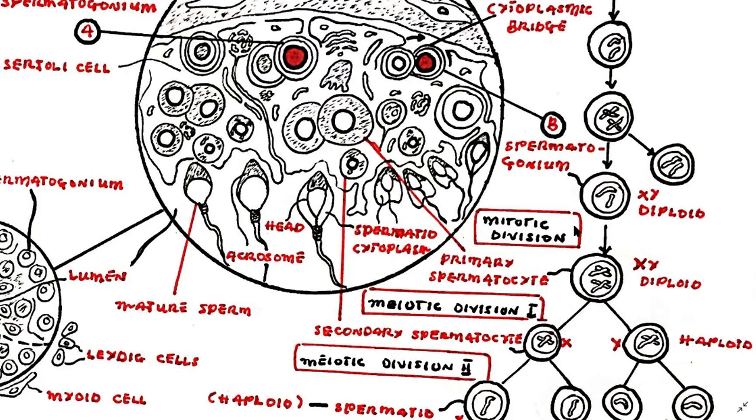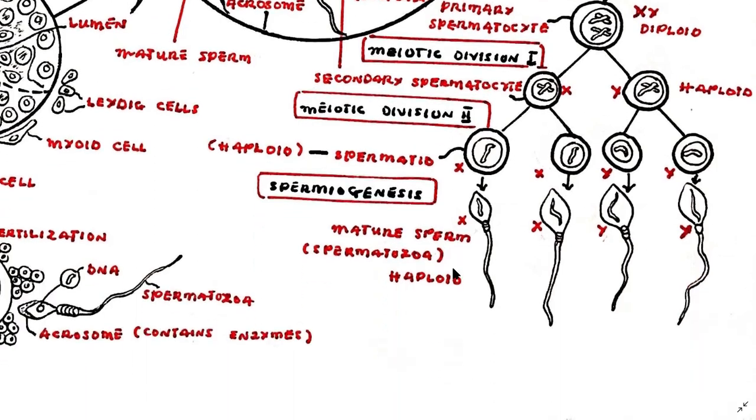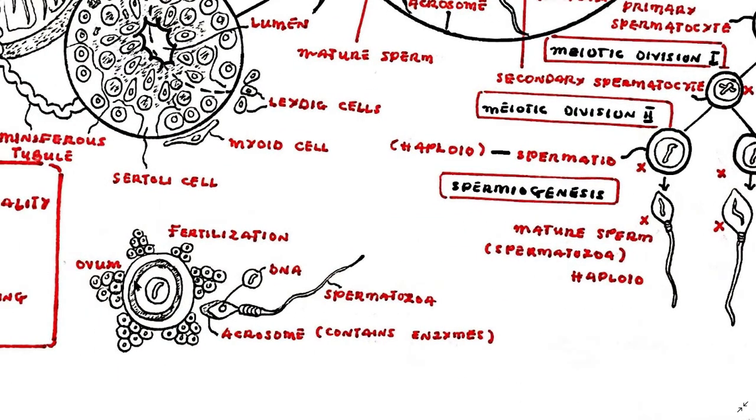At a certain point a spermatogonium will stop its other duties and begin meiosis. The cells that result from meiosis will then pass through more stages of maturation and development and will become mature spermatozoa capable of traveling to and fertilizing an ovum.